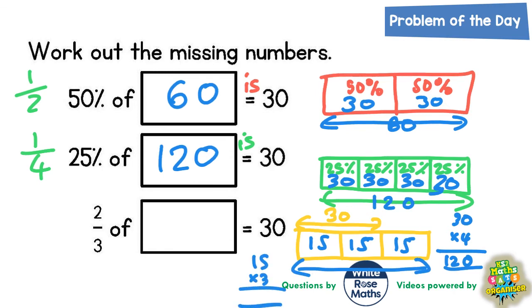And three lots of 15, if you work it out: three fives are 15, put the five in, carry the one, three ones are three plus the one is four, so that's 45. So the whole bar here must be worth 45.